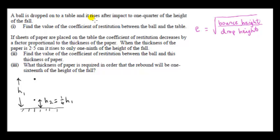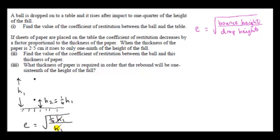A ball is dropped onto a table and it rises after impact to one quarter of the height of the fall. The value of h1 doesn't count, so we need the bounce height, which is a quarter of the drop height — that's h2. So h2 is a quarter of h1, and we divide by the drop height h1. That's the square root of one quarter, which is one half.